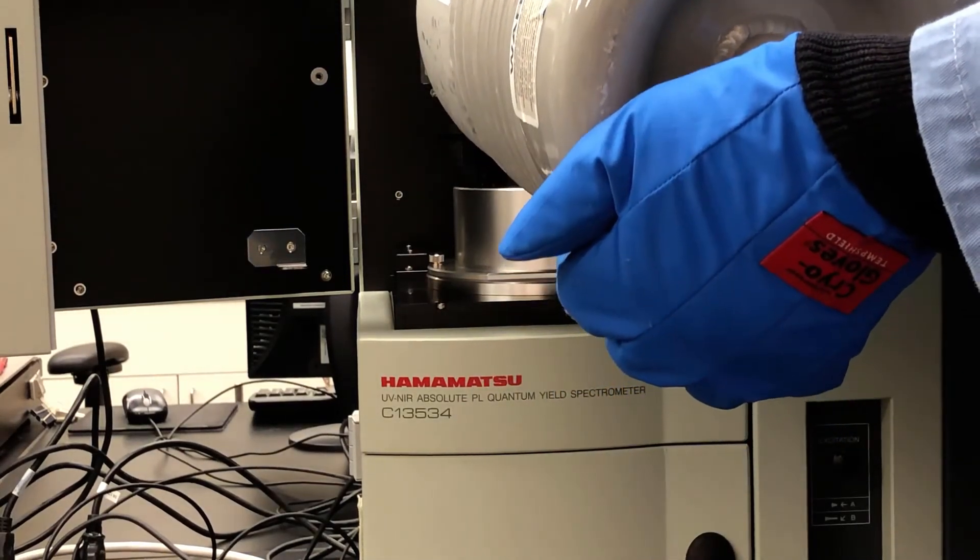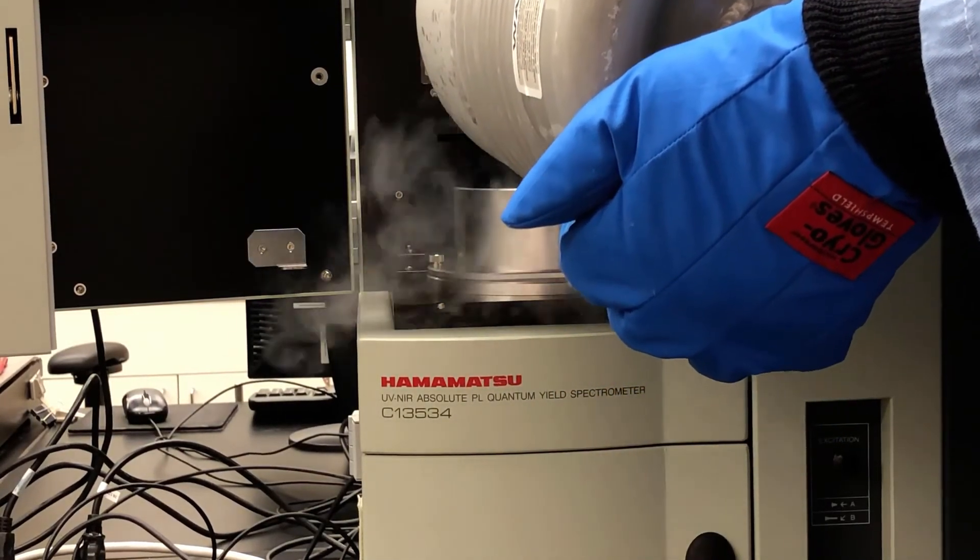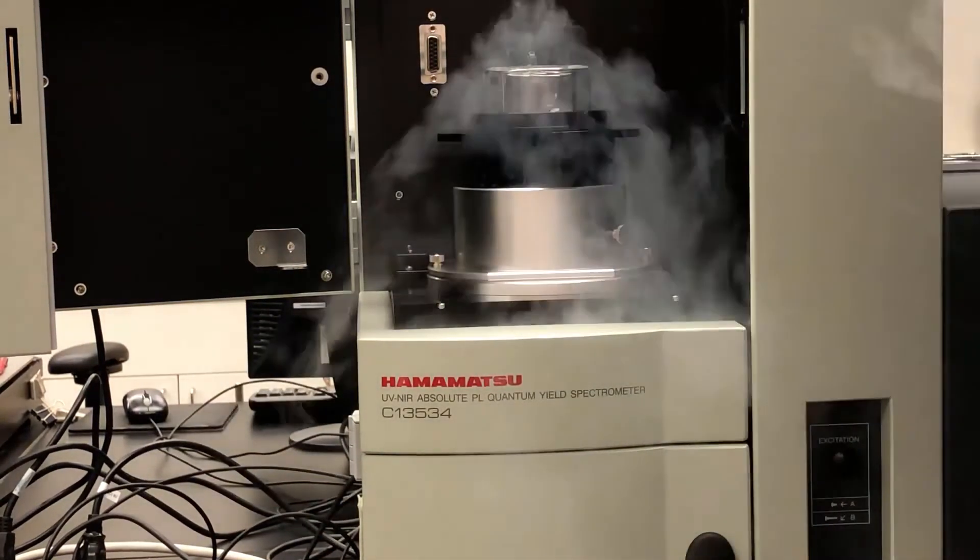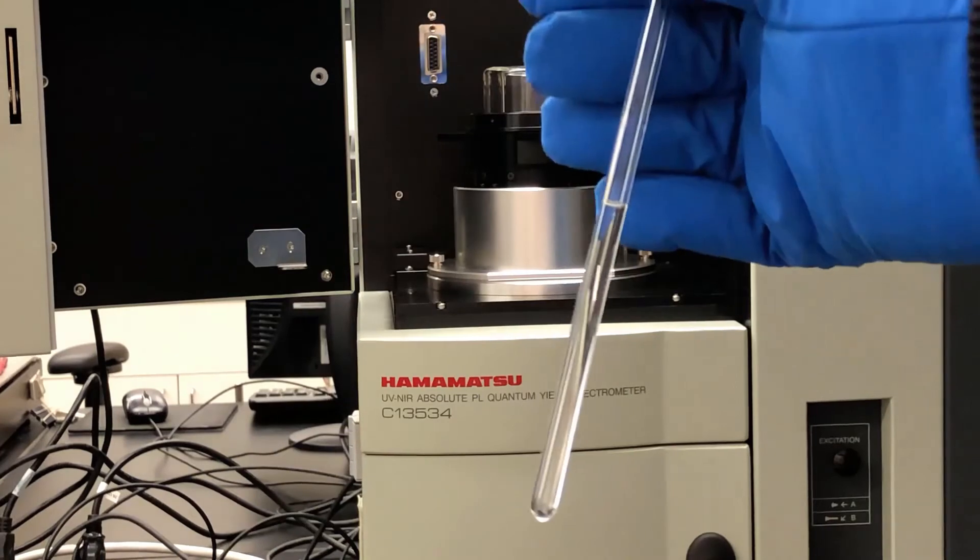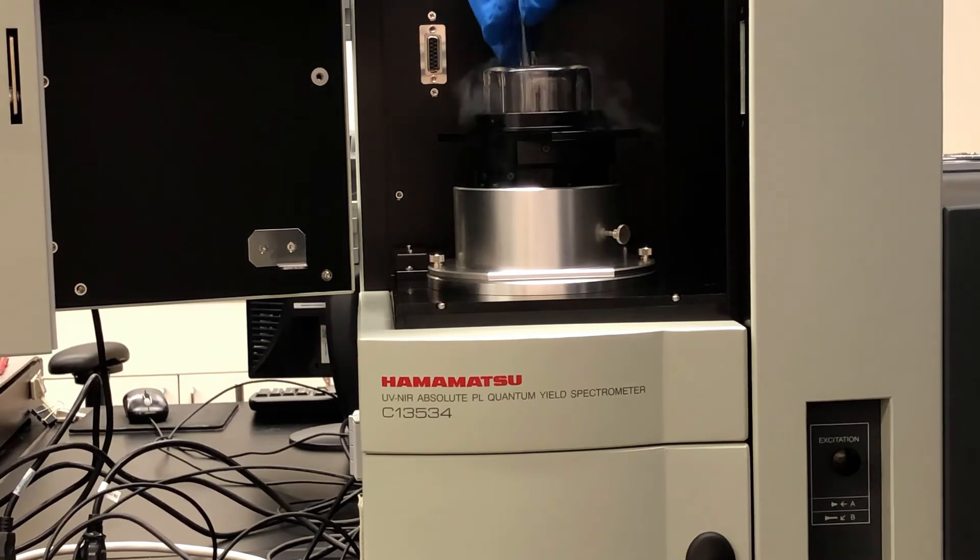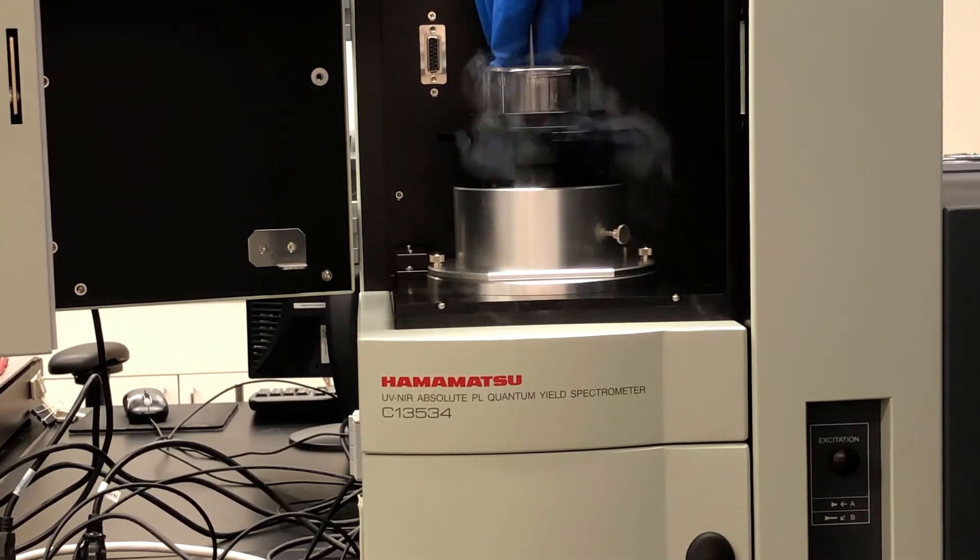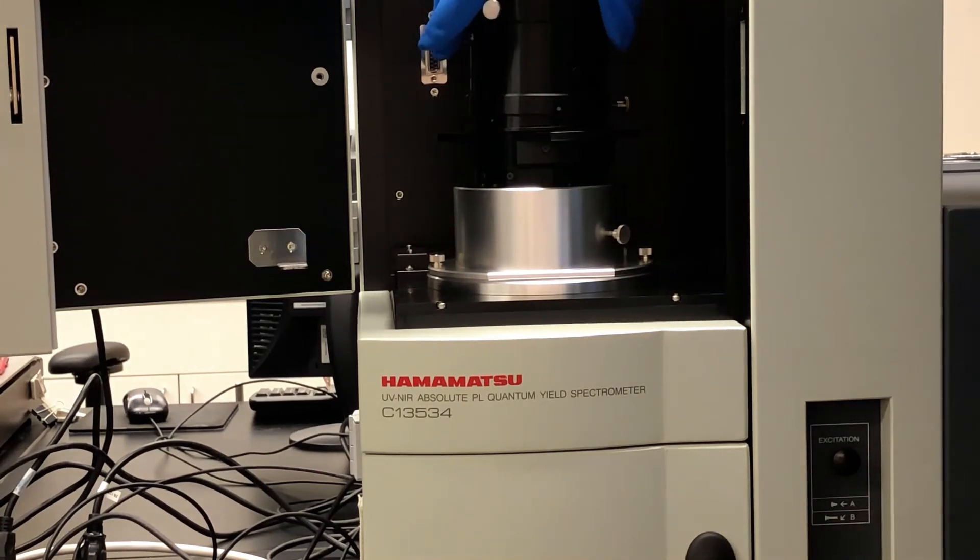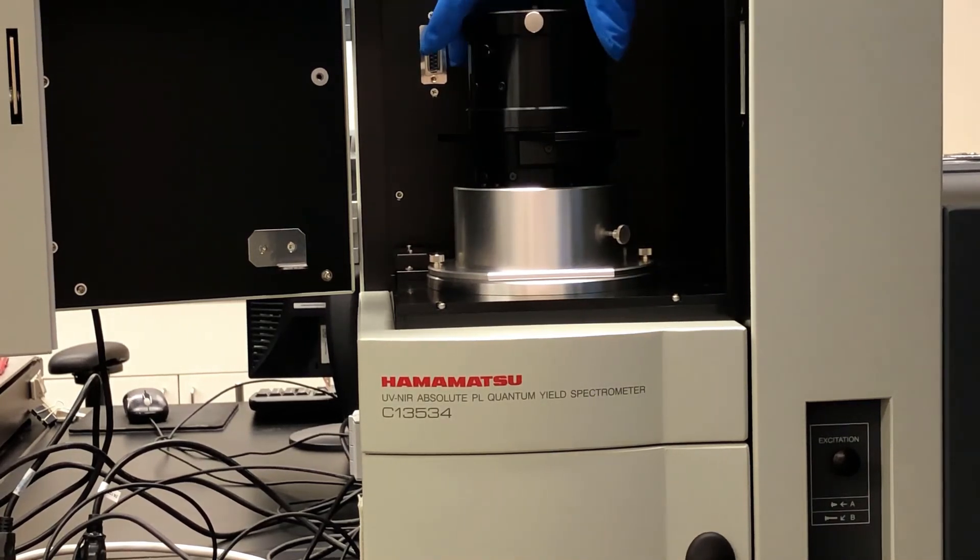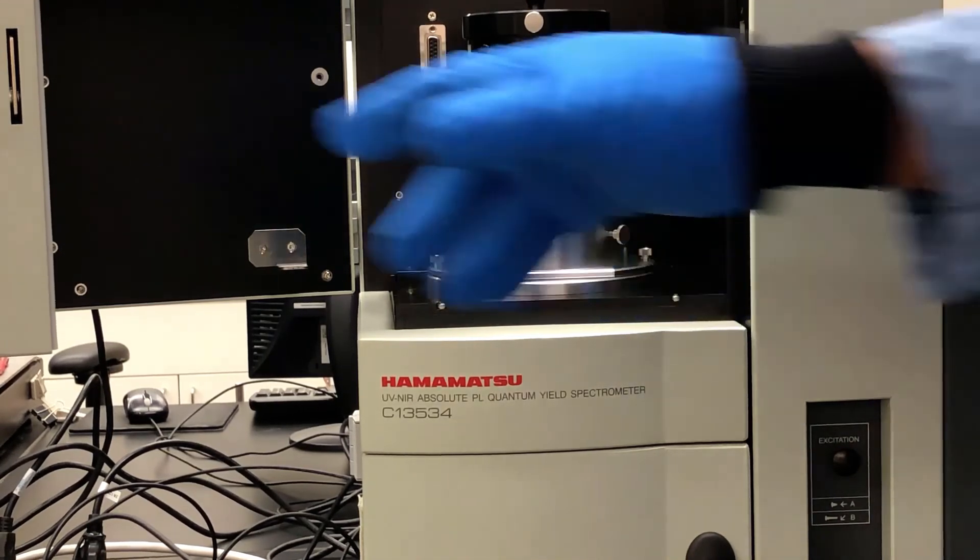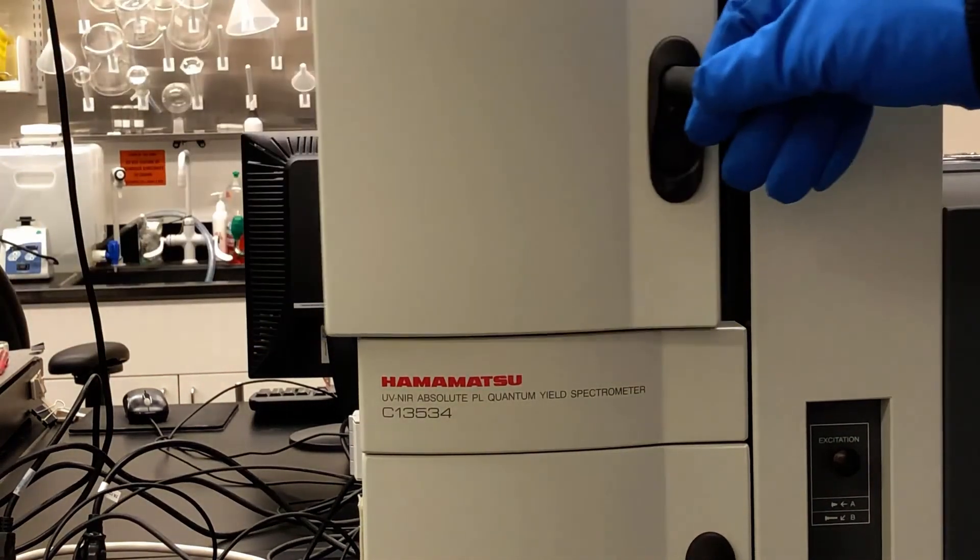When performing cryogenic measurements, solvents that vitrify at low temperature are recommended. We'll be using pure ethanol simply to demonstrate the loading procedure. Let's seal it with a cap to contain the liquid nitrogen. Then you can close the chamber and conduct your measurement.